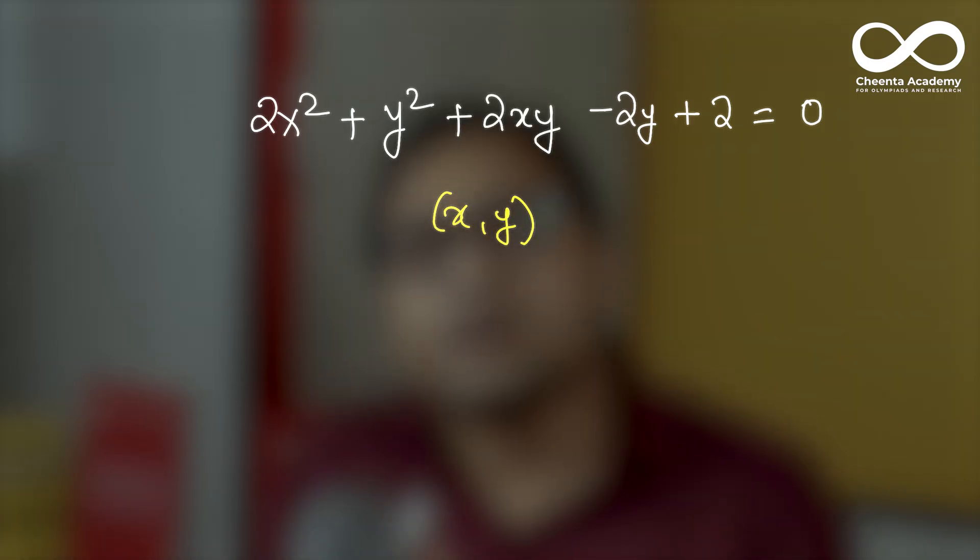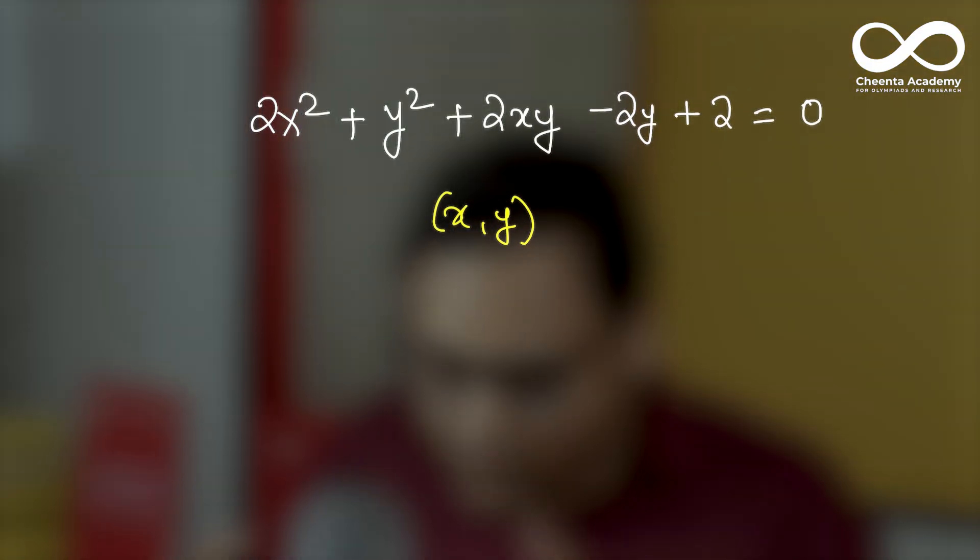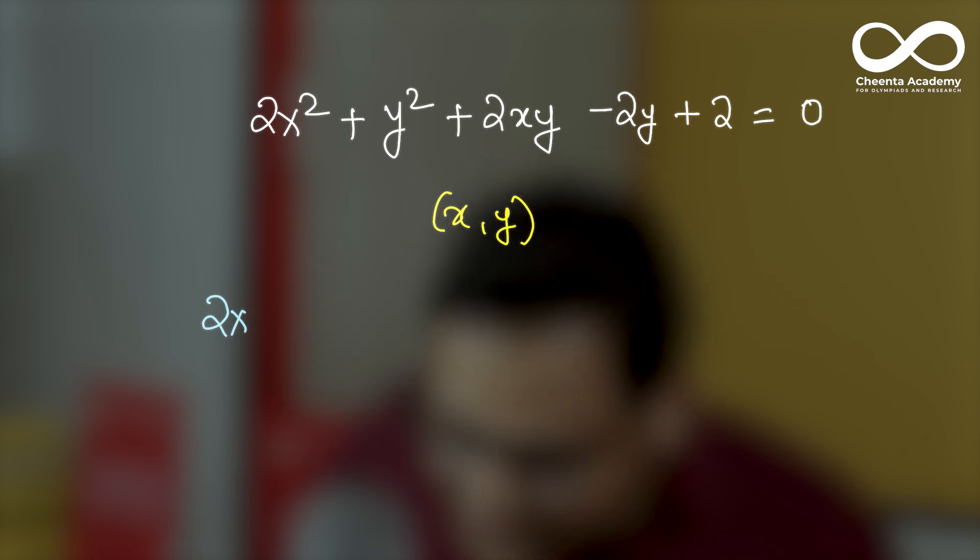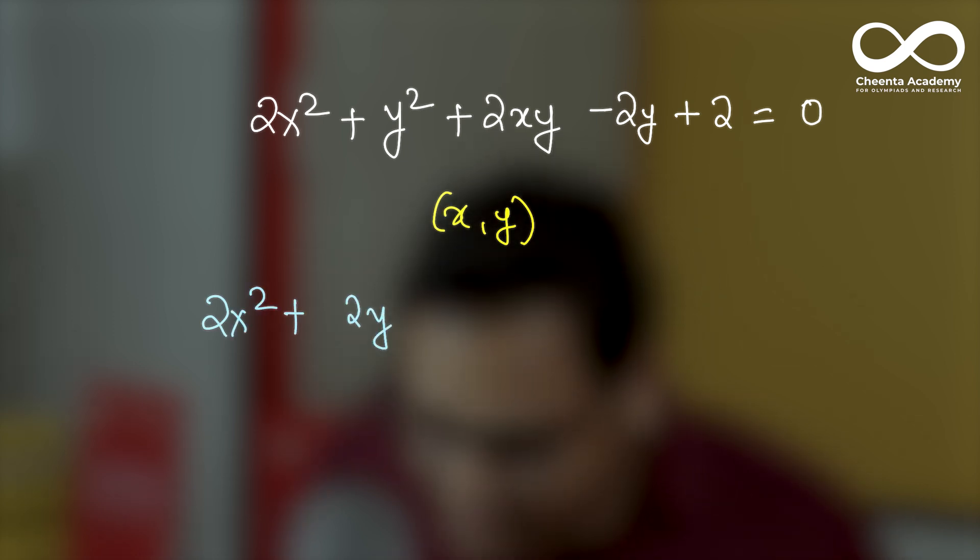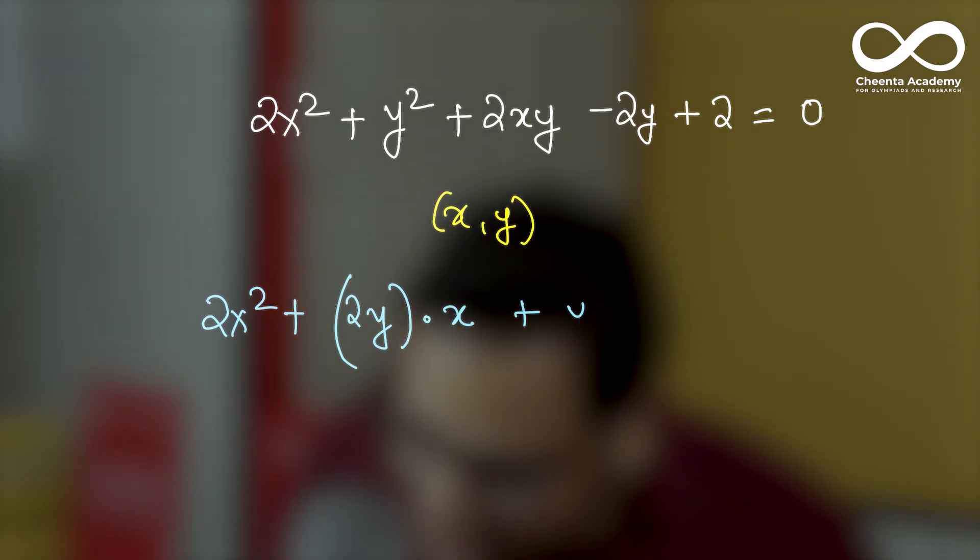We will think of this equation as a quadratic in x and we will pretend y is a constant number. So let's see how we can do that. We will put all the y's together. So this is 2x squared plus 2 times y times x plus y squared minus 2y plus 2 is equal to 0.